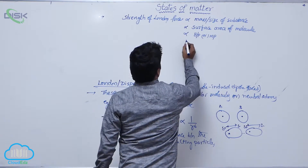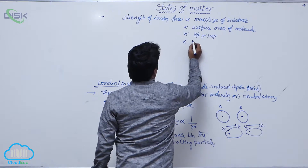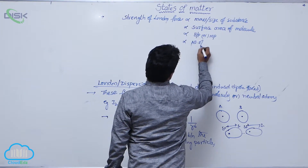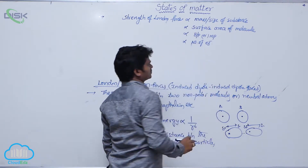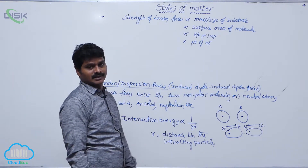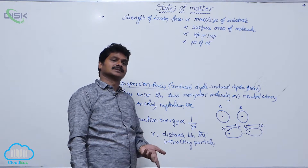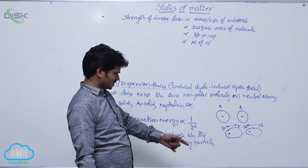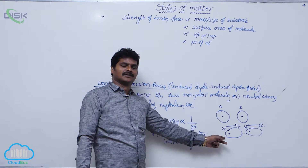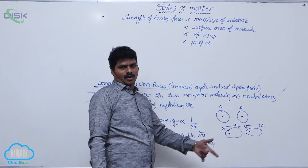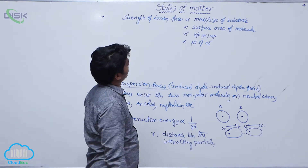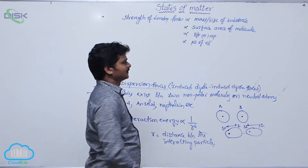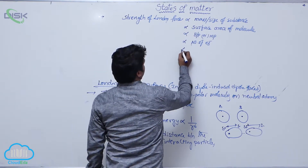Similarly, the total number of electrons is also directly proportional to London force strength. If there are more electrons, there will be more distortion — more distortion in the electron cloud — and that's why, with a greater number of electrons, the strength of London force increases directly.